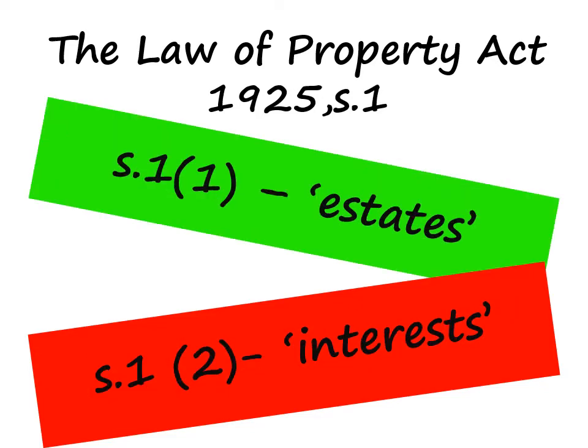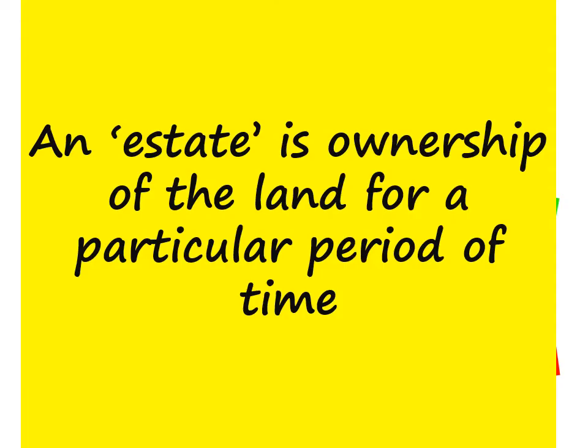Section 1 sets out which property rights are capable of being legal. Section 1, Subsection 1 deals with estates, and Section 1, Subsection 2 deals with interests. In order to know which subsection we need, we need to know the difference between an estate and an interest. An estate is a form of ownership in the land — it gives the person the right to occupy the land, receive any income from it, and transfer ownership to somebody else. For example, a lease is an estate as it gives the owner the right to occupy the land, whereas a right of way over your neighbour's land is an interest.